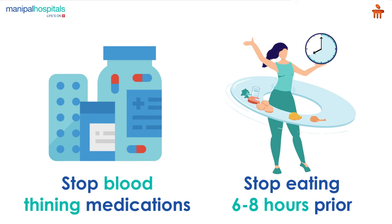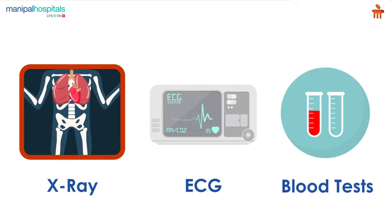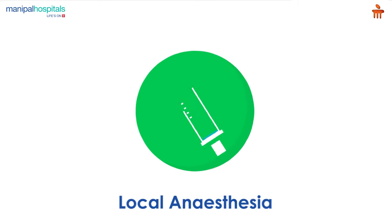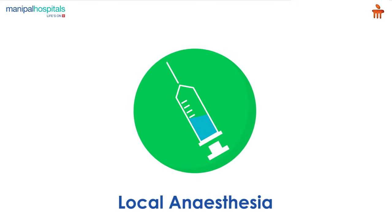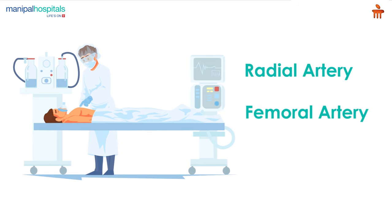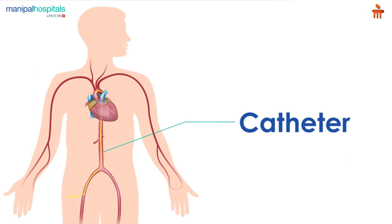X-ray, ECG, and some blood tests may be performed. After administering local anesthesia, the surgeon makes an incision in either the radial, femoral, or ulnar artery depending on the condition, and inserts a catheter.